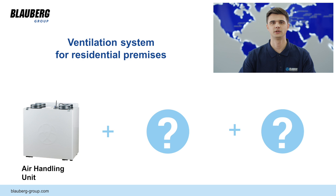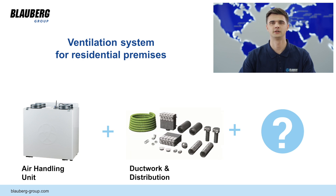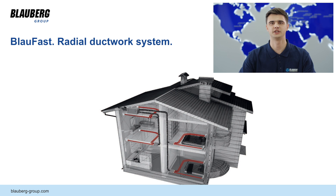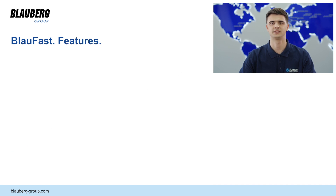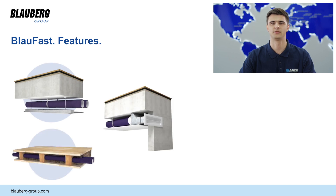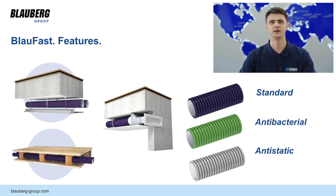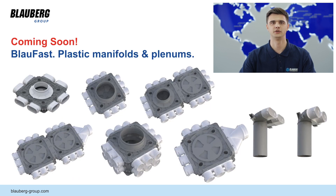The next element of the residential ventilation system is ductwork — in our case the BlauFast radial ductwork system, designed and produced by Blauberg Group. Using BlauFast in residential ventilation provides a compact, silent, easy-to-mount, easy-to-maintain, low-leakage and highly effective duct system. BlauFast allows mounting ducts in ceiling, floor and walls. Four sizes of ducts are available, each in three types: standard, anti-static and antibacterial. New members of the BlauFast family include modular plastic manifolds — compact and universal, designed to fit every size of BlauFast ducts — providing a more compact solution in channel routing, available in different versions and with different numbers of connections.